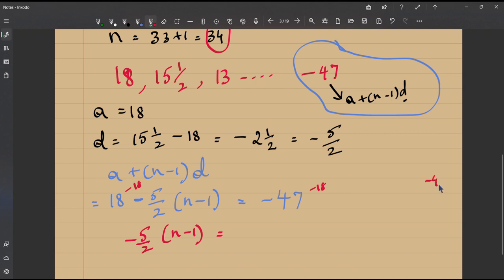What is 47 plus 18? It is 7, 14, 15, 5, 1, 65, right? It is minus 65.